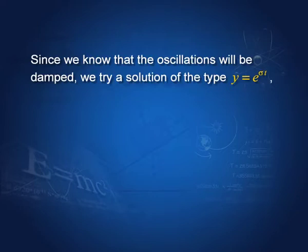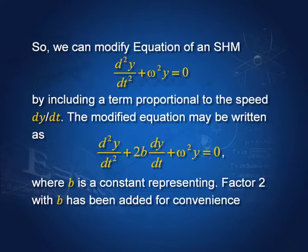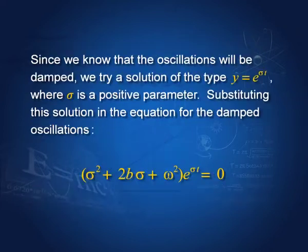We try a solution of the type y = e^(σt), where σ is a positive parameter. We substitute this solution into the equation d²y/dt² + 2b·dy/dt + ω²y = 0, and we get (σ² + 2bσ + ω²)·e^(σt) = 0. Now, e^(σt) is obviously not zero, because that is our solution.